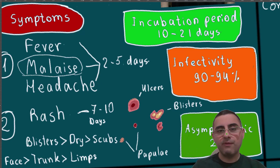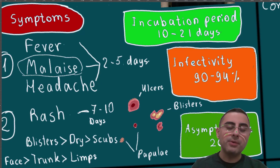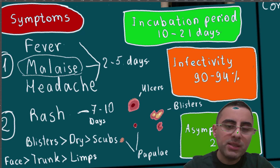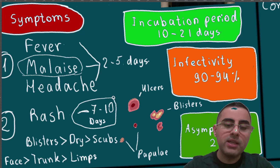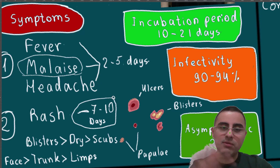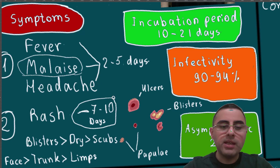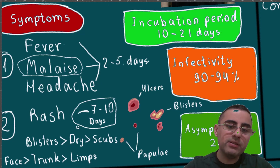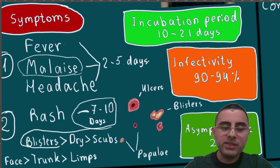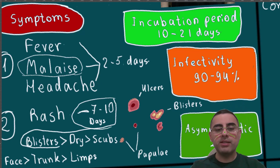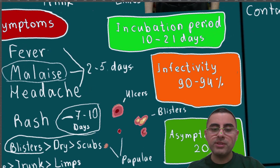From around the second to fifth day, the rash occurs and typically lasts for seven to ten days, though it can last more or less. The rash type is typically blisters, which eventually dry out and scab, forming crusts.